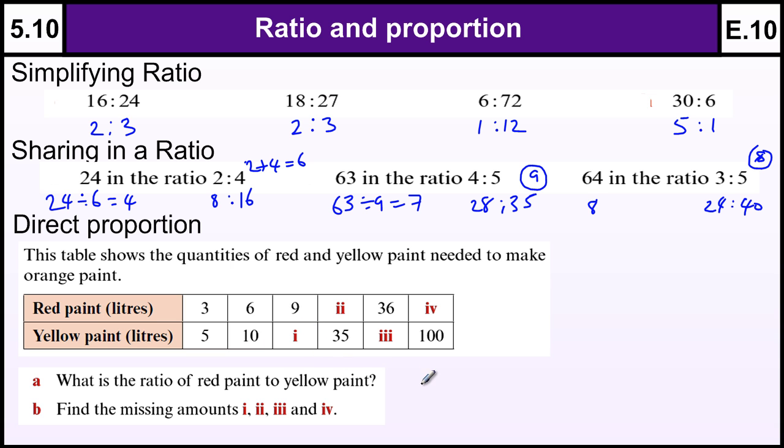another 5 to there to make 15. So i would be 15. The ratio of red to yellow paint is the red to yellow which is 3 to 5. We could use 6 to 10 but that would cancel down to 3 to 5. That's the simplest form of the ratio.